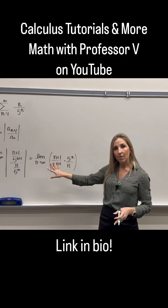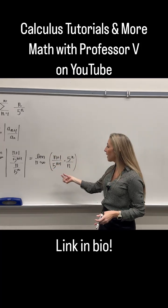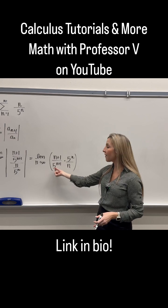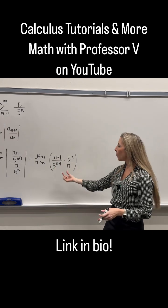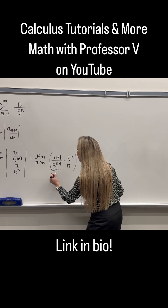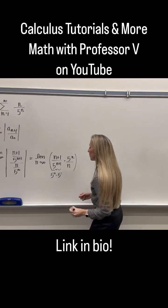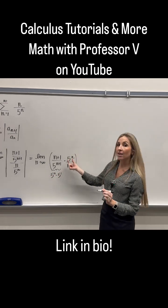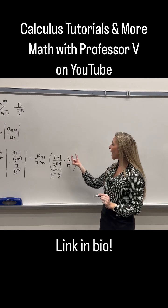Now we want to simplify so we can evaluate the limit. The key comes from breaking up 5 to the n plus 1. I want to rewrite it or think of it as 5 to the n times 5 to the first, because now see how I have another 5 to the n on the other side. I can cancel both of those guys out.